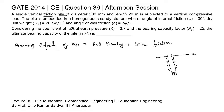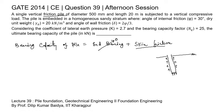In this question, it is clearly mentioned that the pile is a friction pile. For a friction pile, we may ignore the end bearing. So we only need to calculate the skin friction — whatever skin friction we get will be the ultimate bearing capacity.